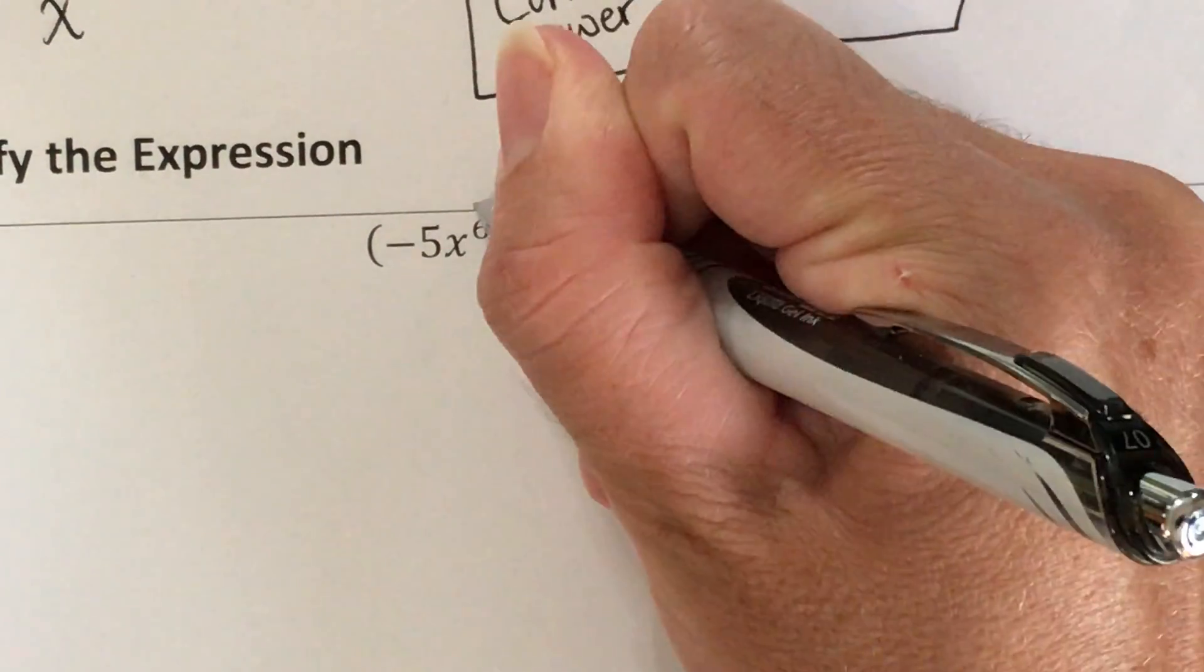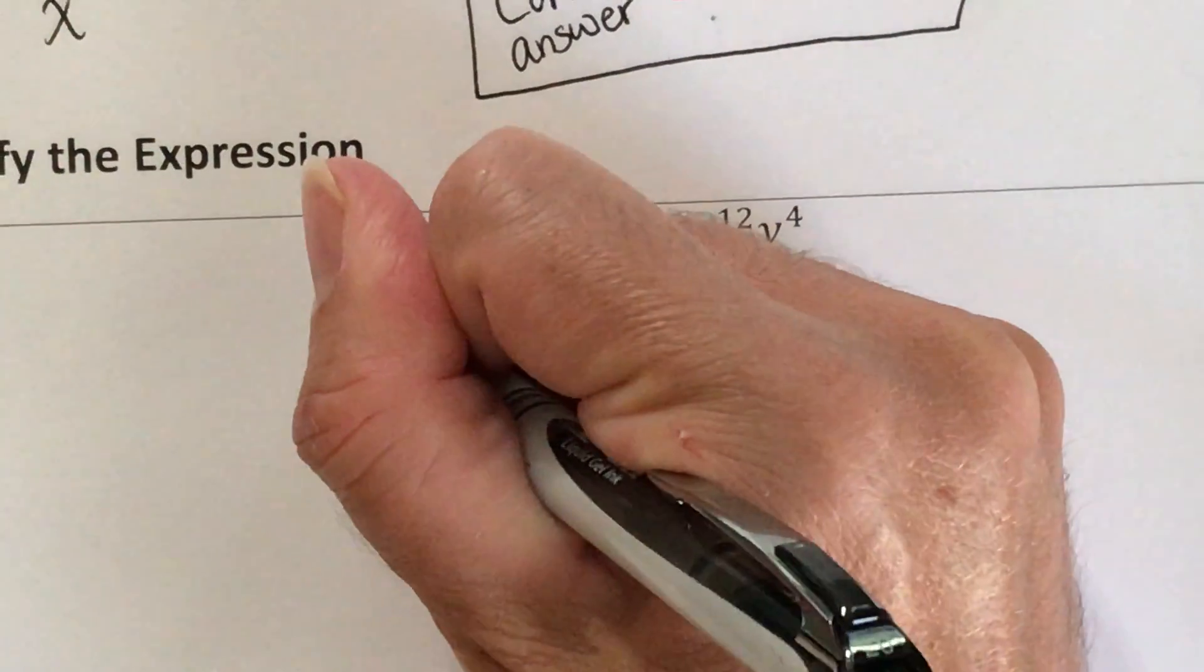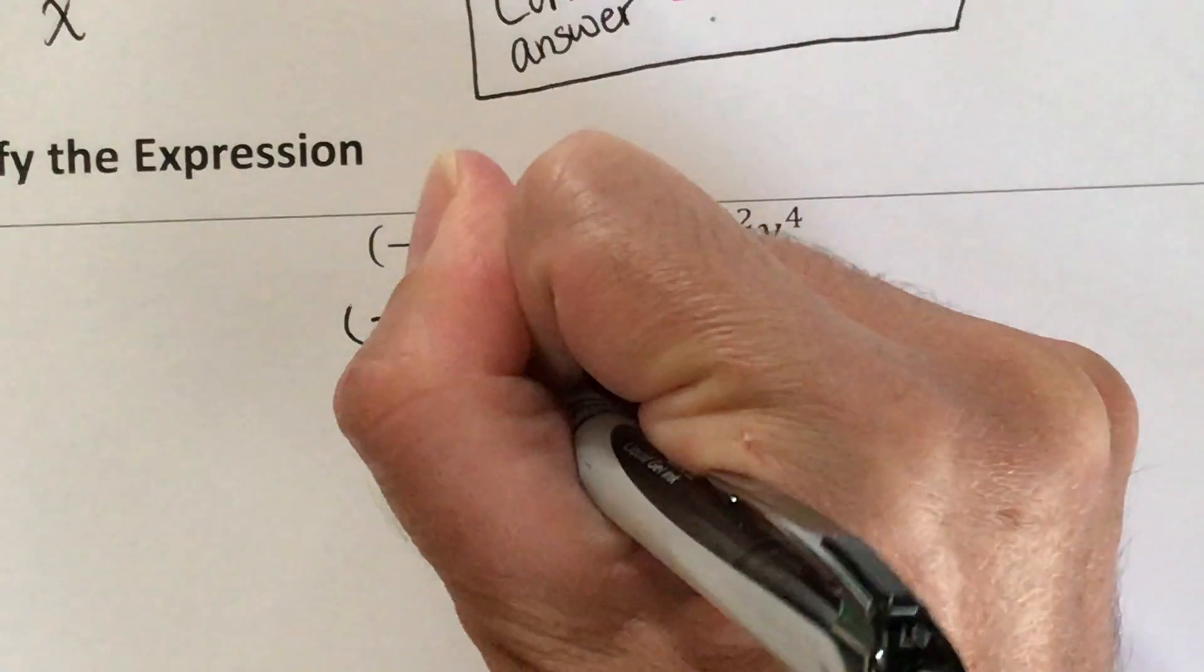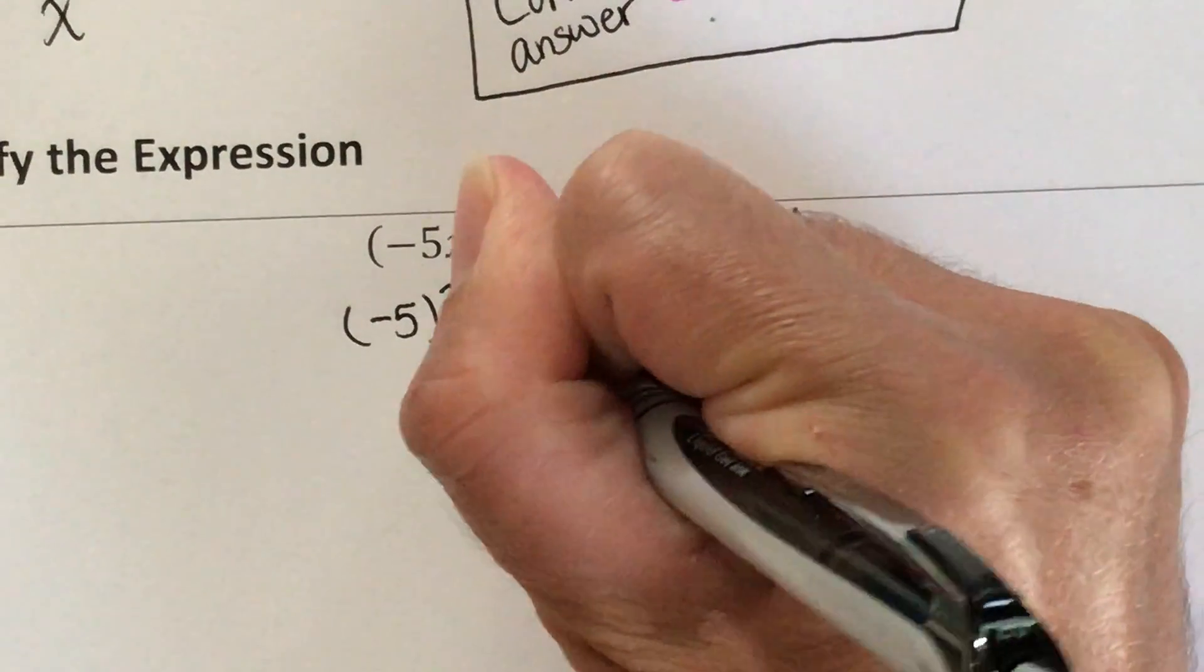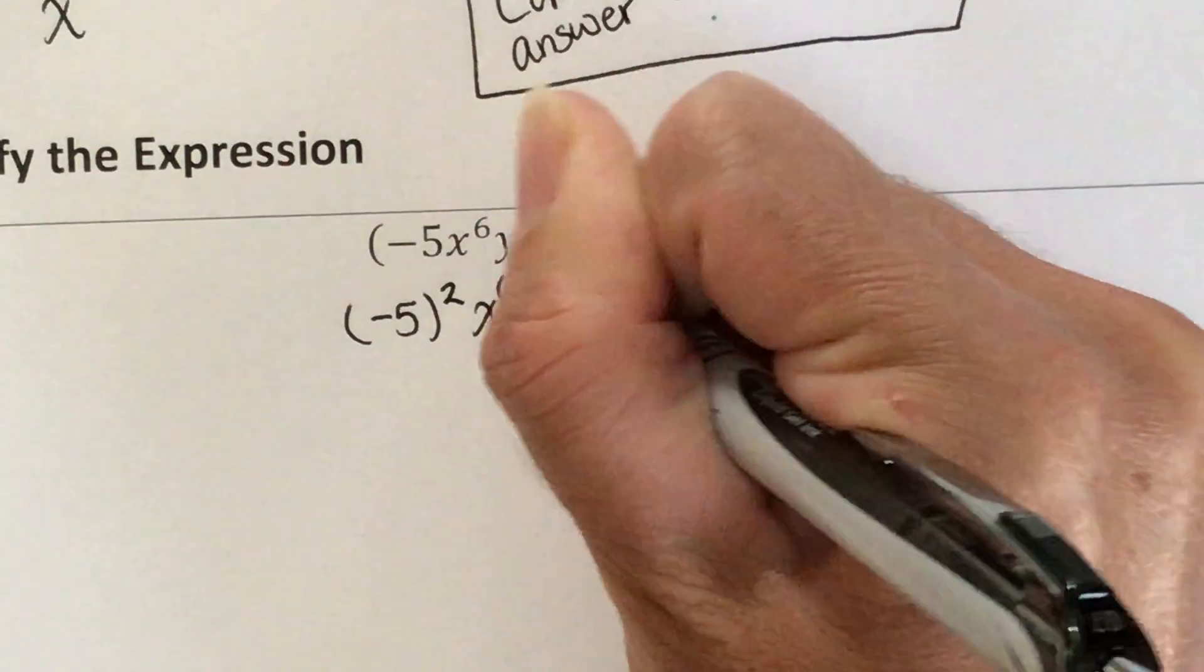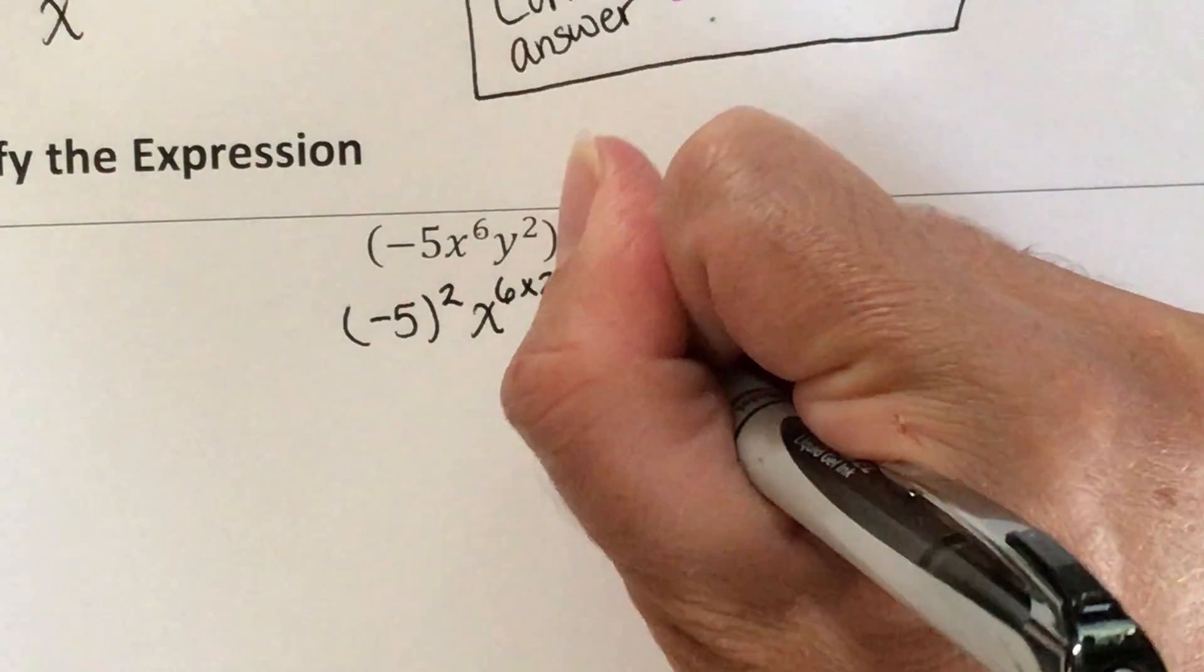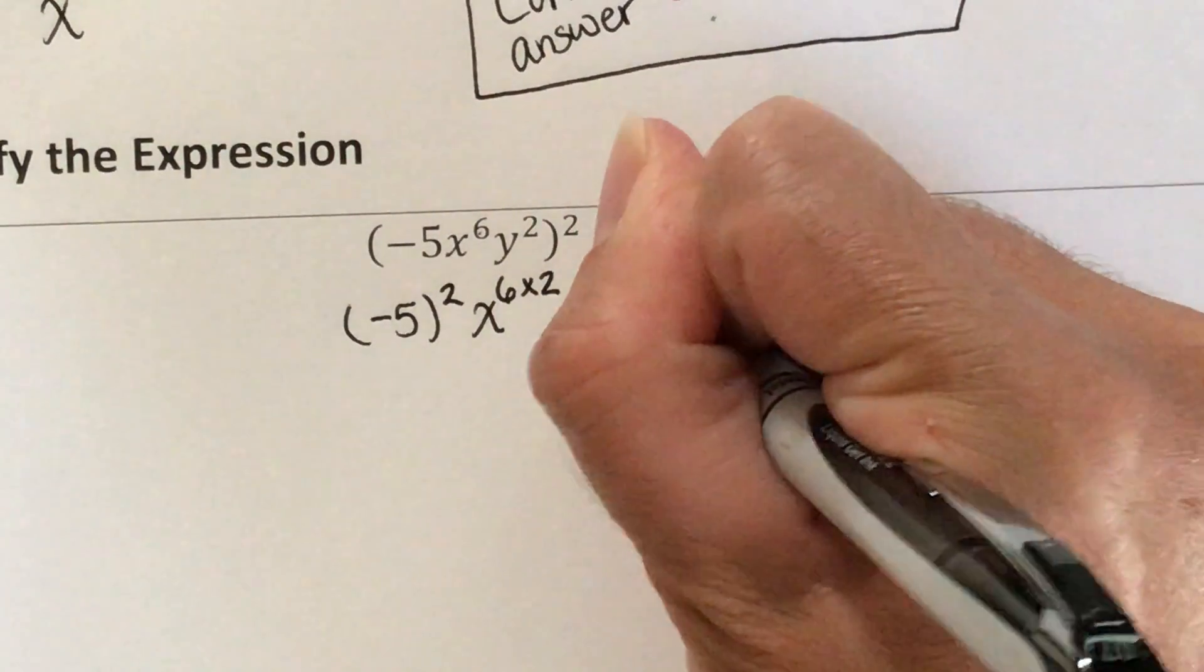So I'm going to start by getting rid of those parentheses by distributing the exponent to all of the bases that I have. So it becomes a negative 5 squared, an x to the 6 times 2. Remember, a power to a power, we multiply our exponents. And then a y to the 2 times 2.